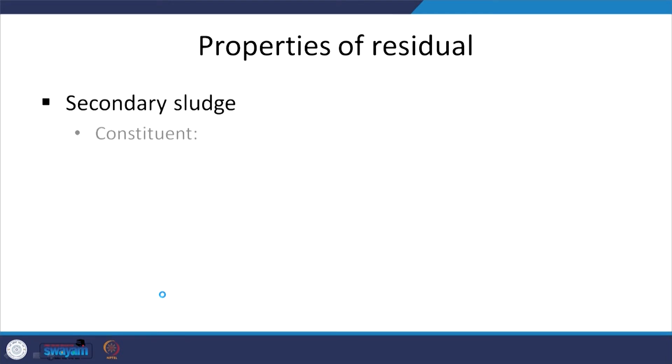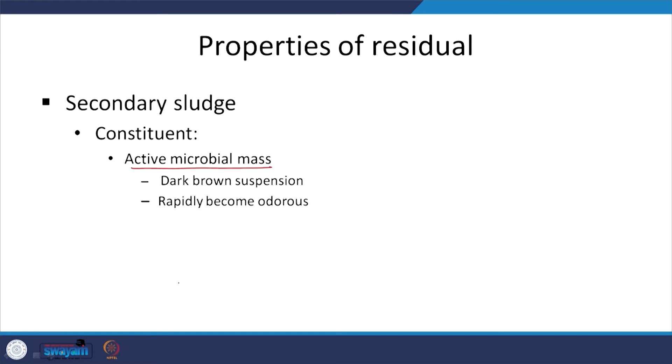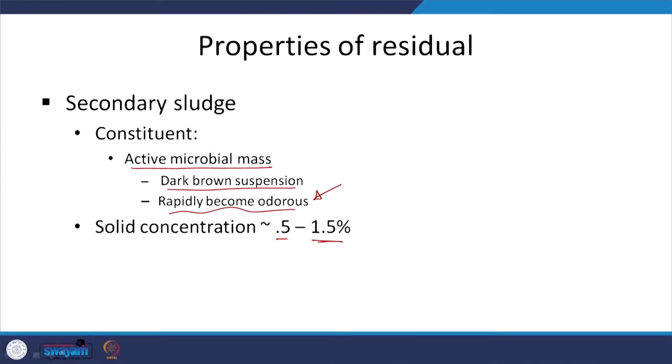Secondary sludge or from the activated sludge — what is it mostly made of? It consists of microbial mass or microbes. Typically dark brown, it is organic matter cells. These microbes will die without access to waste and oxygen, and then these dead microbes, which are organic matter, will be degraded by other kinds of microbes. That will rapidly become odorous during anaerobic conditions. Solids concentration is 0.5 to 1.5 percent, and suspended solids as expected have considerable organic or biodegradable content.